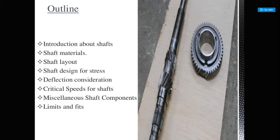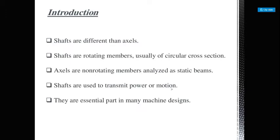What is a shaft? Shafts are different from axles. Shafts are rotating members, usually of circular cross section. Axles are non-rotating members and are analyzed as static beams. Shafts are used to transmit power or motion and are an essential part in many machine designs.